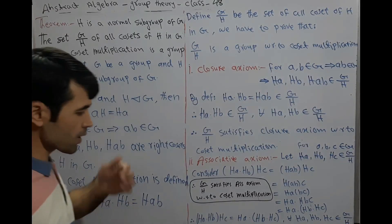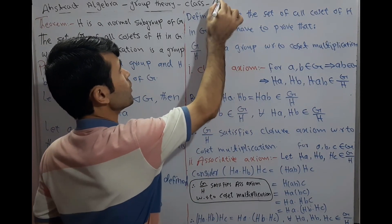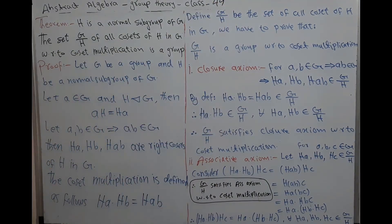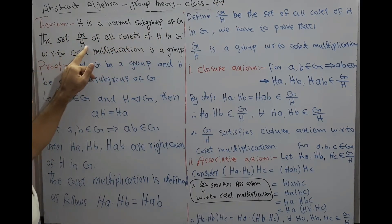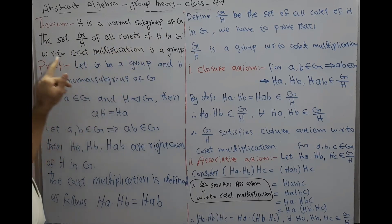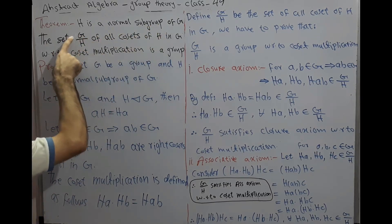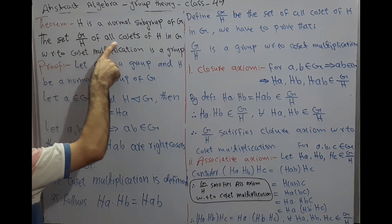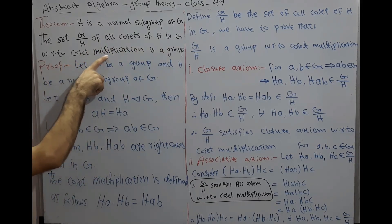Hello friend, welcome to the abstract algebra class. It is class 49. Here we want to prove a theorem: H is a normal subgroup of G. The quotient group or factor group G by H, of all cosets of H in G with respect to coset multiplication, is a group.